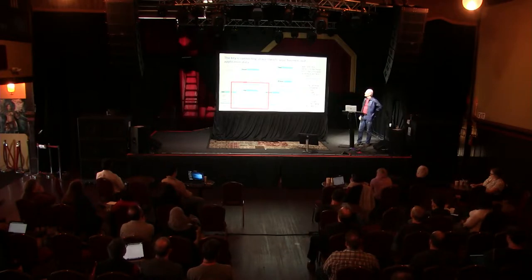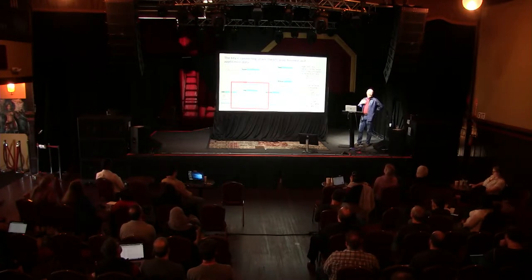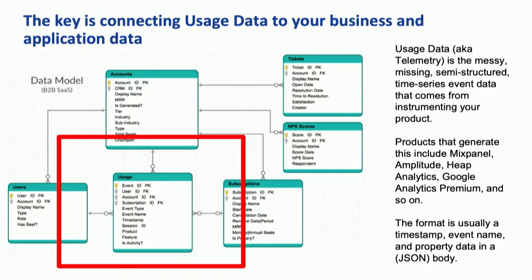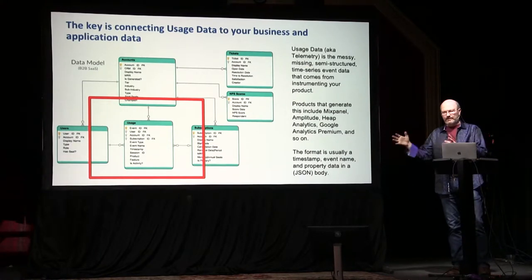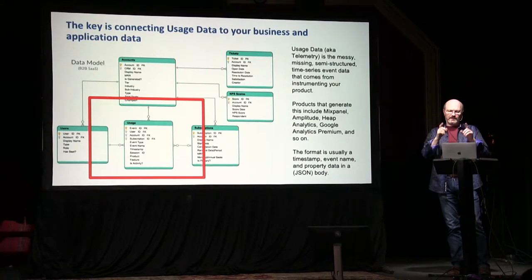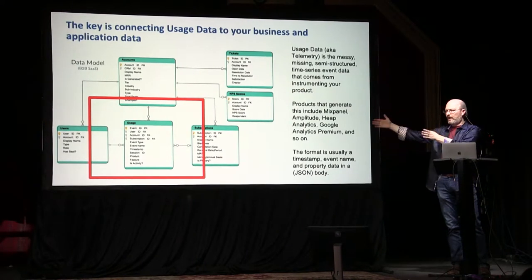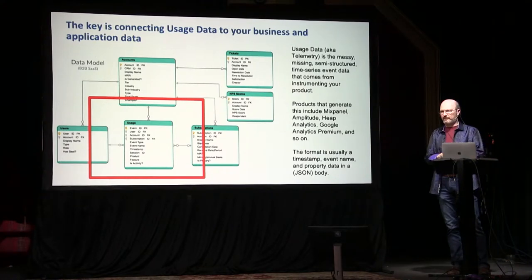Before I move on to the model and feature engineering portion, I'm going to talk a little bit about usage data. When I say usage data, behavioral data, or telemetry data, I'm talking about this messy, missing, semi-structured time series event data. It typically comes in from things like Mixpanel, Heap, or Amplitude. The format is generally line-delimited JSON — it's semi-structured. It generally comes in the form of a timestamp, an event name, and a body of key-value pairs very specific to that particular event.